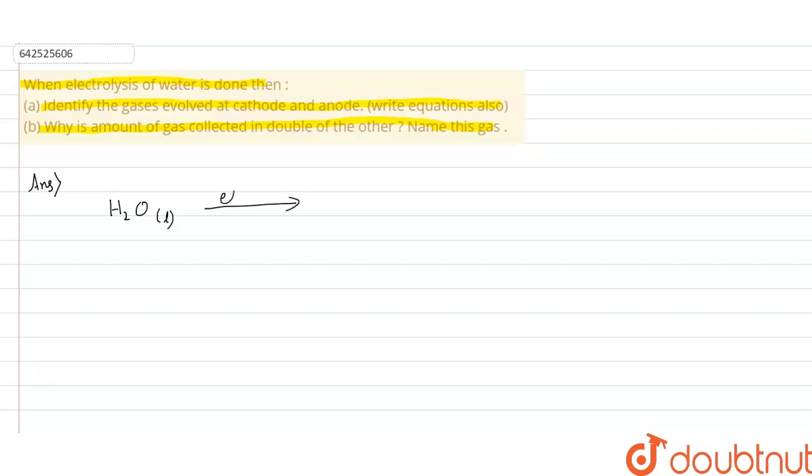In this question, when electrolysis of water is done, we have to identify the gases evolved at the anode and cathode. First of all, we will write the equation: H₂O (liquid). When electric current is passed through it, we get H₂ gas plus O₂ gas. O₂ is formed at the anode and H₂ is formed at the cathode.